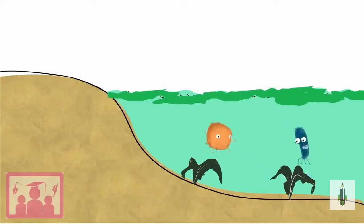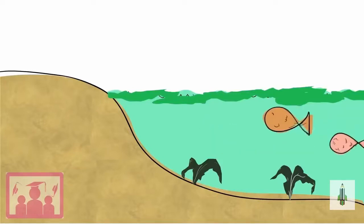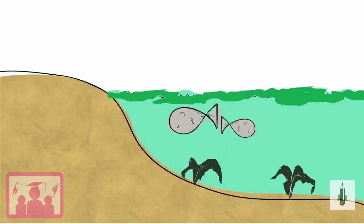Water without oxygen is called anoxic. If the water turns anoxic, all non-bacterial life in the water, including fish and other animals, will die.